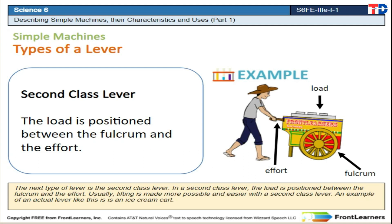The next type of lever is the second class lever. In a second class lever, the load is positioned between the fulcrum and the effort. Usually, lifting is made more possible and easier with a second class lever. An example of this is an ice cream cart.